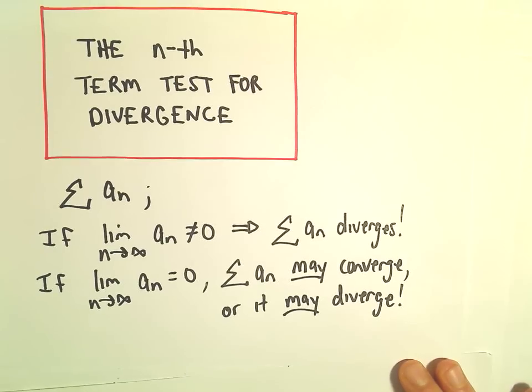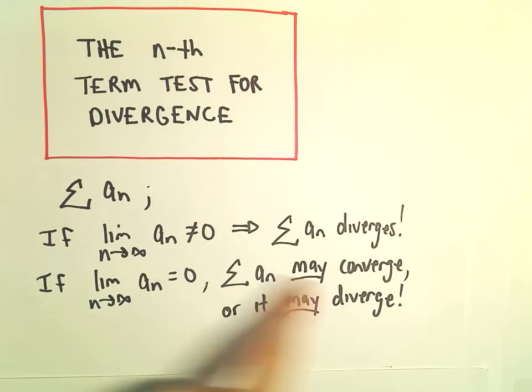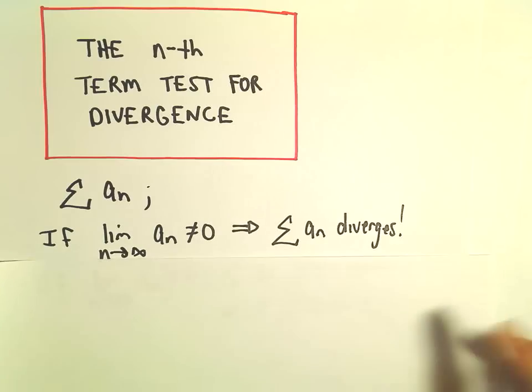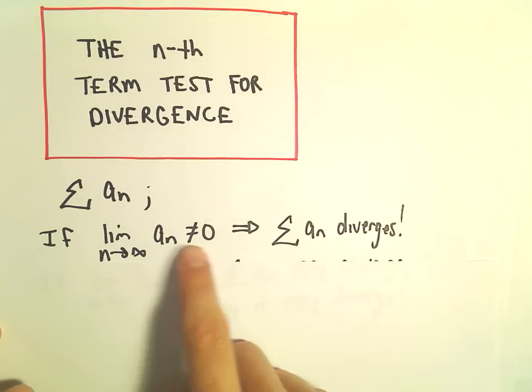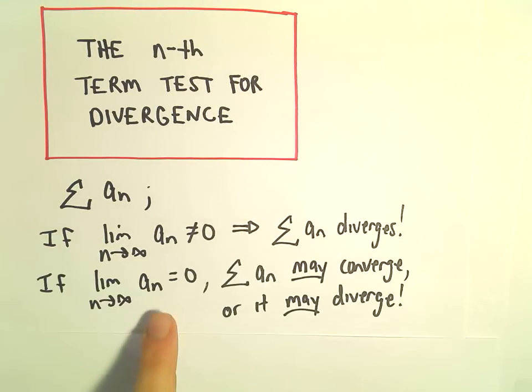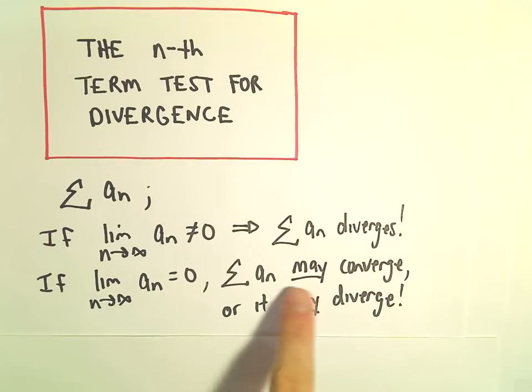So be careful because the common mistake, series are confusing I think for a lot of people. They certainly were for me when I first started dealing with them. They still are tricky a lot of times. People will fall into the trap. They'll say, oh, if it's not equal to zero, they'll remember that it diverges. And then they'll mistakenly say, well, if it equals zero, I guess it does converge.